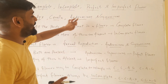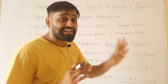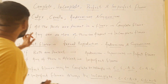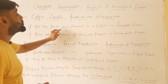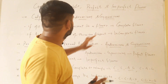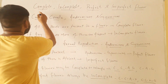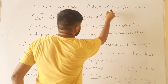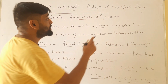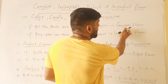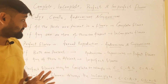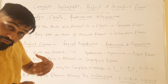The four parts of a flower are: calyx, corolla, androecium, and gynoecium. If all four parts — calyx, corolla, androecium, and gynoecium — are present in a flower, then this flower will be called a complete flower.